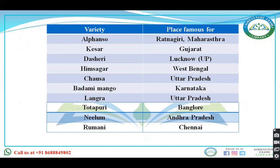Variety locations: Alphonso — Maharashtra, Ratnagiri; Kesar — Gujarat; Daseri — Lucknow, UP; Himsagar — West Bengal; Chausa — Uttar Pradesh; Badami — Karnataka; Langra — Uttar Pradesh; Totapuri — Bangalore; Nilam — Andhra Pradesh; Romani — Chennai.